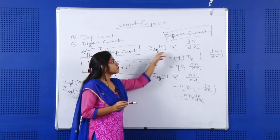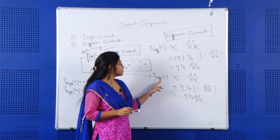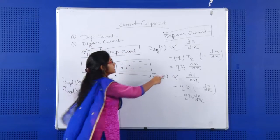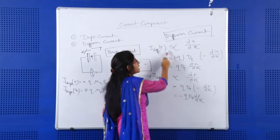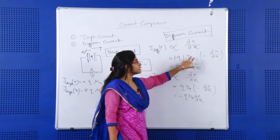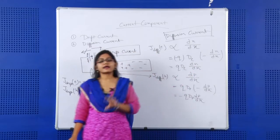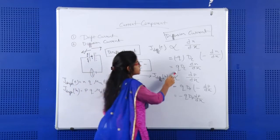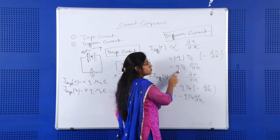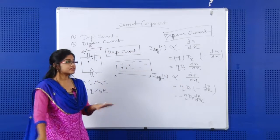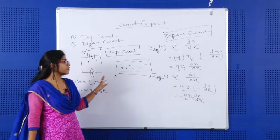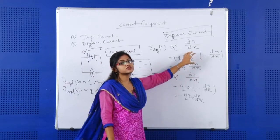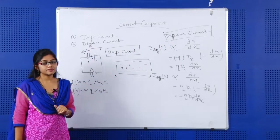J_diffusion for electrons is proportional to dn/dx, and for holes is proportional to dp/dx. For electrons, J_diffusion equals −q × Dn × (dn/dx), where q is the electron charge (negative), Dn is the diffusion constant, and the negative sign reflects that current flows from higher concentration to lower concentration. If the concentration throughout the device is the same — that is, dn/dx = 0 — then you will not get any diffusion current from the semiconductor device.